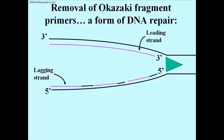In contrast, several Okazaki fragments are shown having been made along the lagging strand template, each with a primer shown in black. So the question now is, how is the primer removed and how are the remaining gaps filled in with DNA nucleotides?